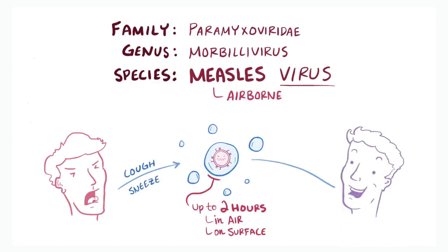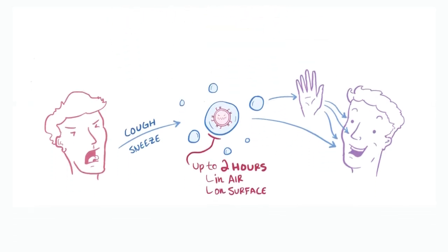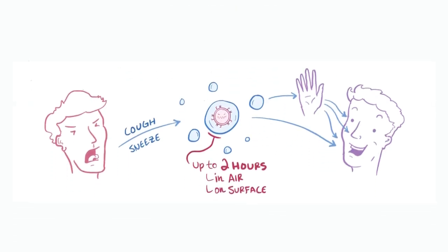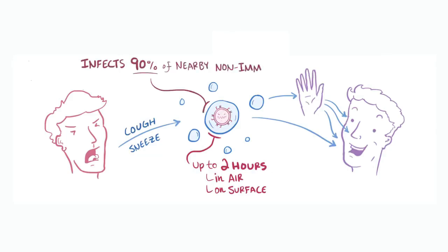If someone breathes in that air or touches a surface and then touches their eyes, their nose, or their mouth, they can become infected. Measles is so contagious that if one person has it, 90% of nearby non-immune people will also become infected.